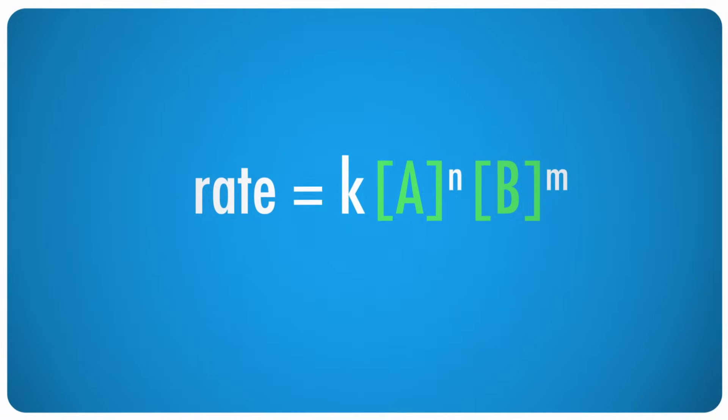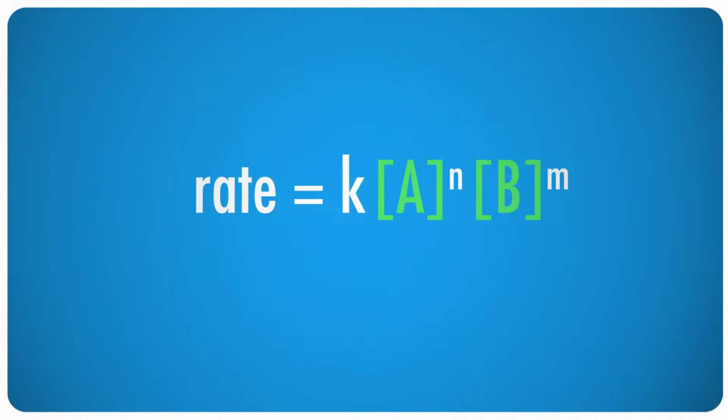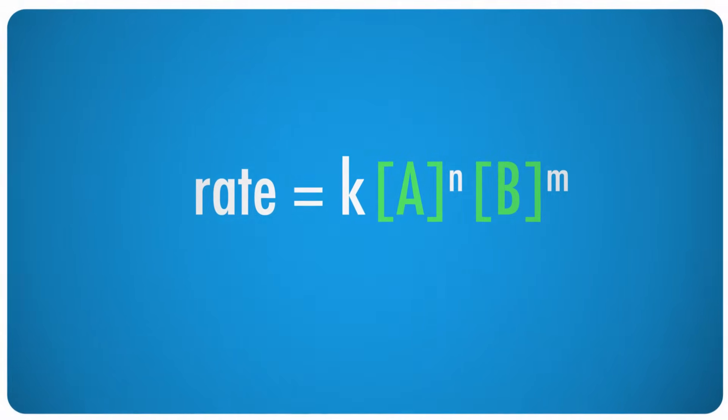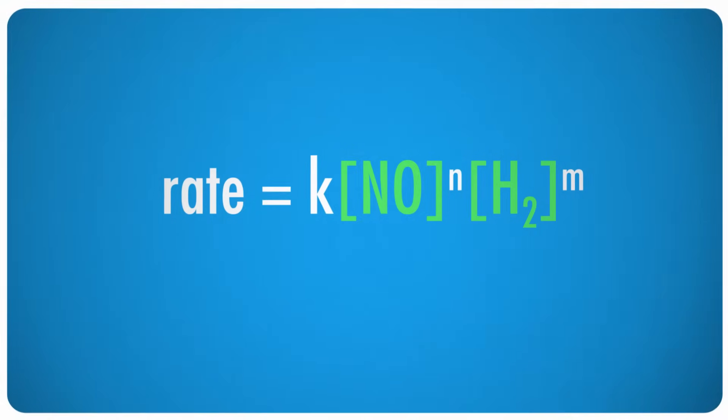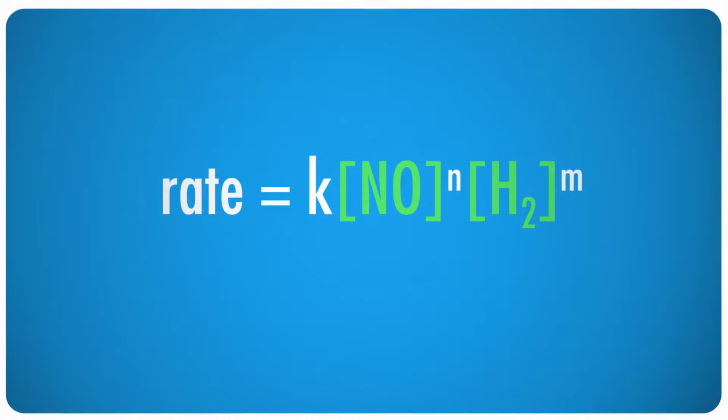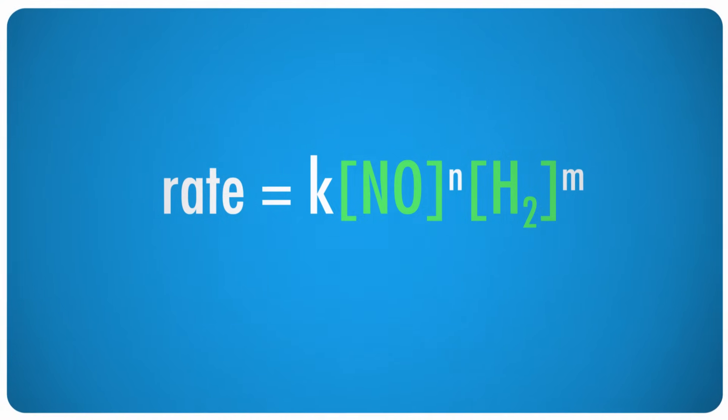The rate law for a reaction is written like this. The rate equals a constant, K, times the concentrations of each reactant raised to some power. Notice that only the reactants are used for this, not the products. The rate law for our nitric oxide reaction then ends up as K, times the nitric oxide concentration raised to some power, times the hydrogen concentration, also raised to some power. So you're probably wondering about all those raised to some power, like what power, and you should be wondering that.